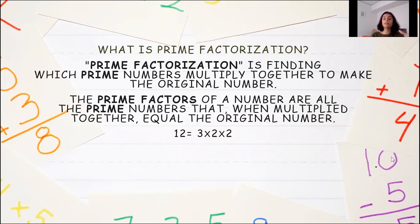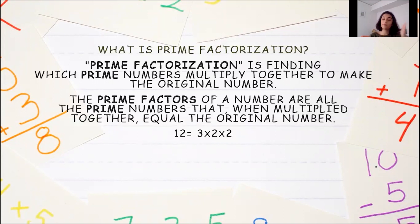For example, 12 equals 3 into 2 into 2 is the prime factorization of 12. Because 3 into 2 gives you 6, and 6 into 2 gives you 12. So 12's prime factorization is 3 into 2 into 2, since those are the prime numbers which when multiplied give you the original number, that is 12.